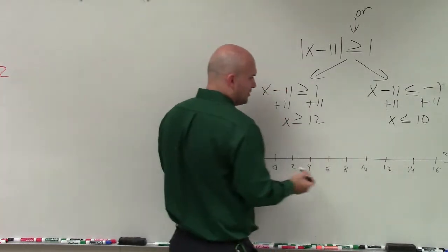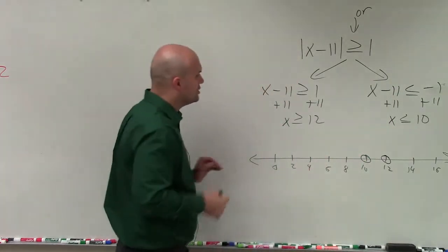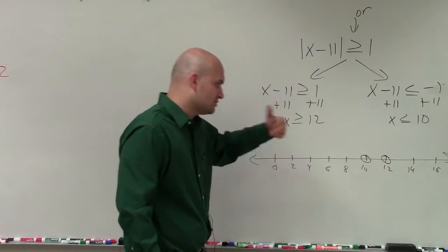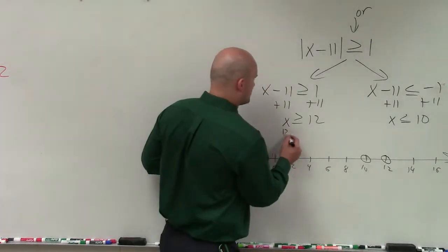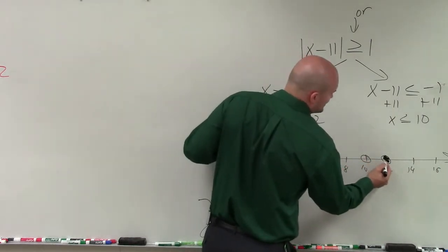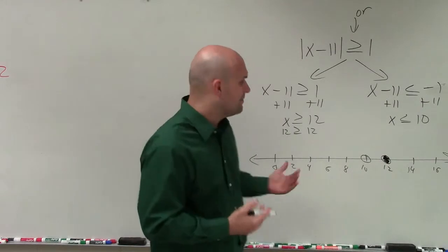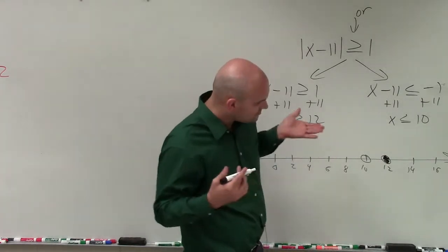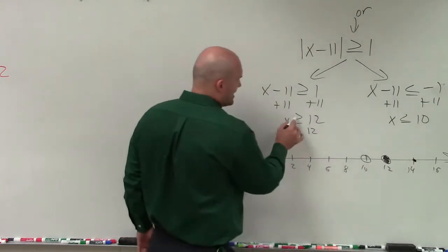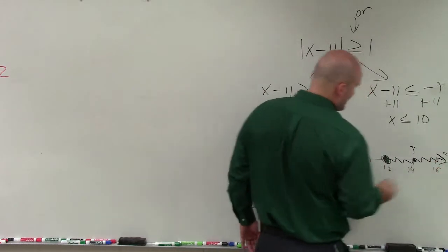The next thing is we need to go ahead and plot these two points, which I have 12 and I have 10. Now it's important for me to know, let's just work at one inequality at a time. This says x is greater than or equal to 12. So if I plug in 12, well, 12 is greater than or equal. Well, it's equal to. So therefore, 12 is a part of the solution. The next thing is I want to choose a test point, and let's just choose 14. Is 14 greater than or equal to 12? Yes, that's true. So therefore, I'm going to shade to the right.